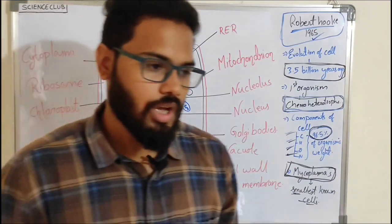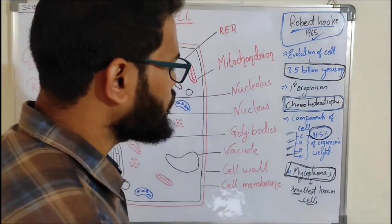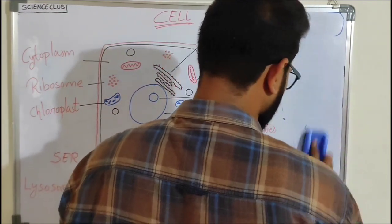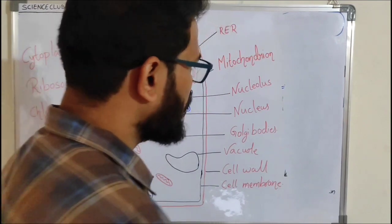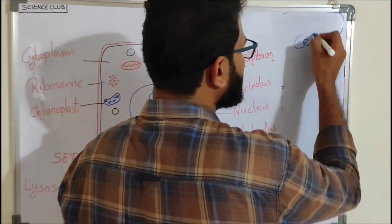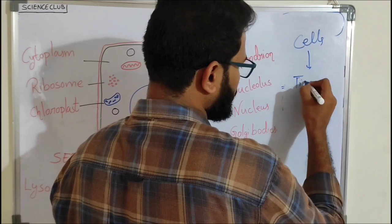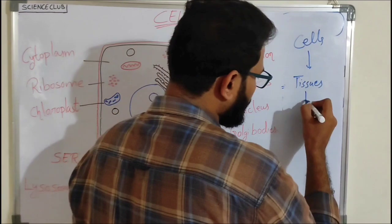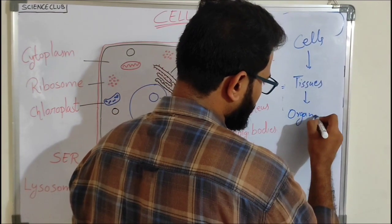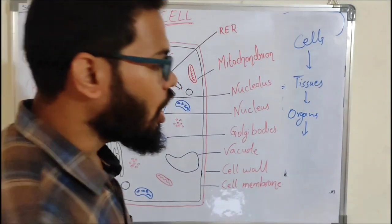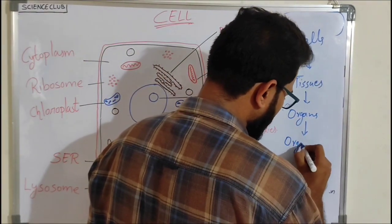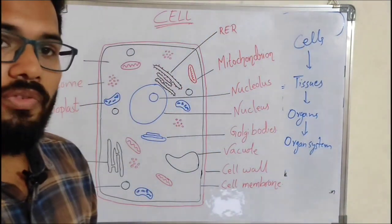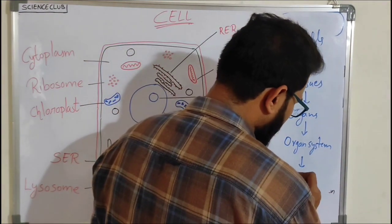What are the cells of tissues? A group of cells forms tissues. A group of tissues forms organs, and the group of organs forms an organ system.